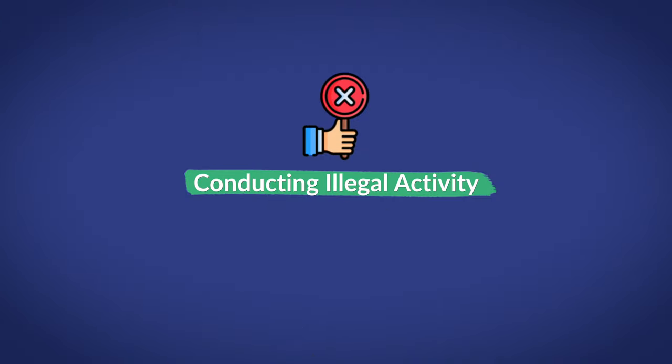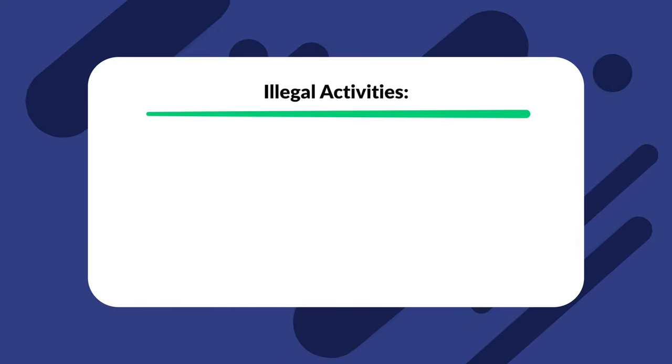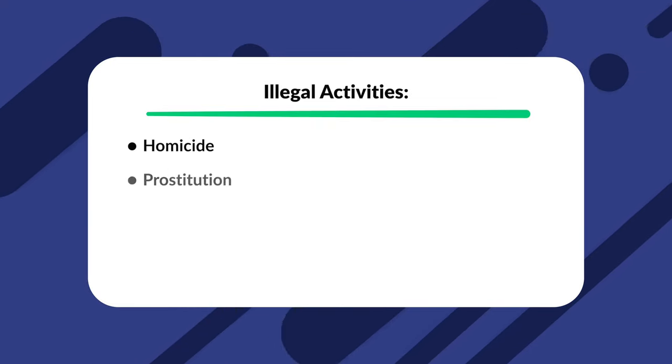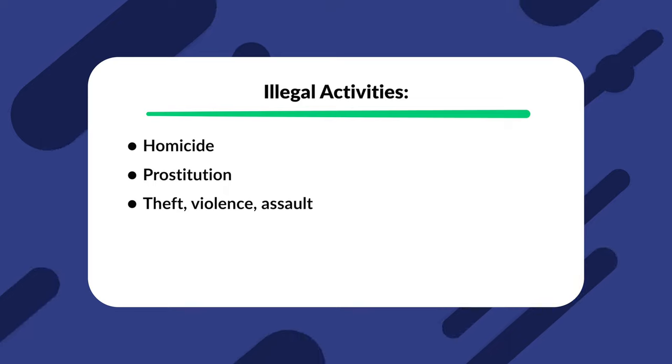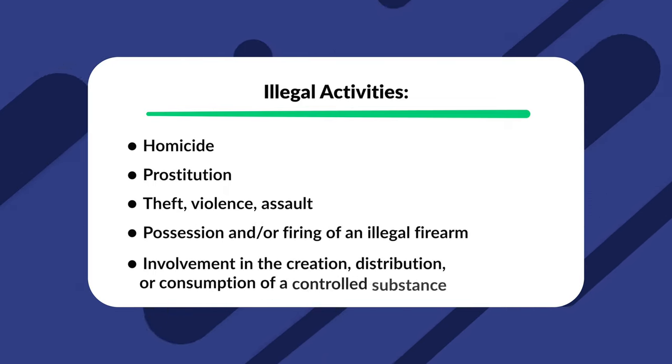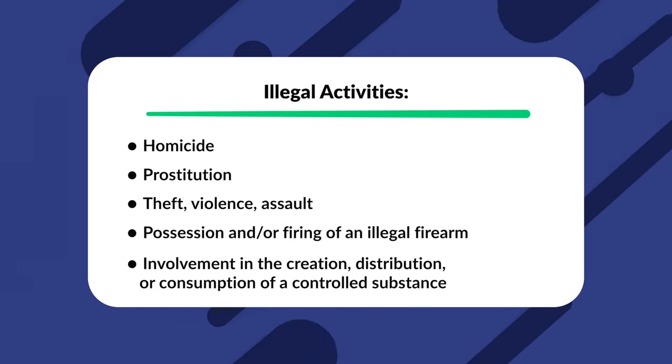Number three: conducting illegal activity. If a tenant has engaged in illegal behavior within the property, the landlord must give the tenant an official written seven-day notice to quit. Examples of illegal activity include, but are not limited to, homicide, prostitution, theft, violence or assault, possession and/or firing of an illegal firearm, and involvement in the creation, distribution, or consumption of a controlled substance. A landlord must keep an eye on their tenants to make sure illegal behavior does not go unnoticed.